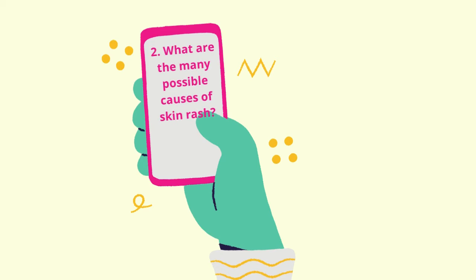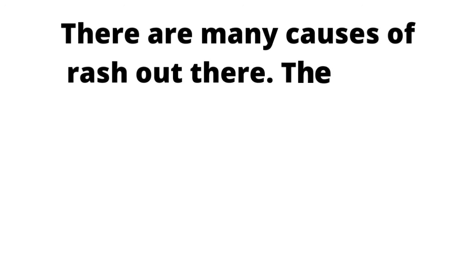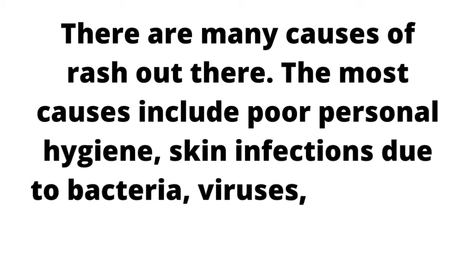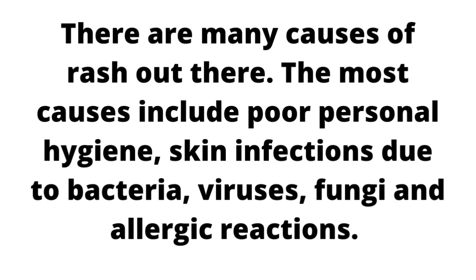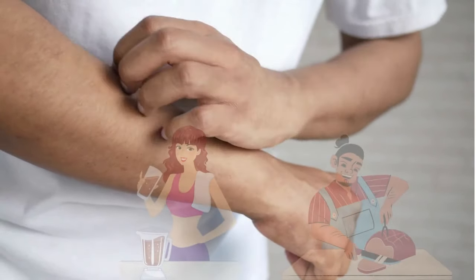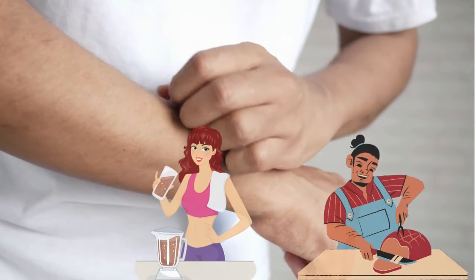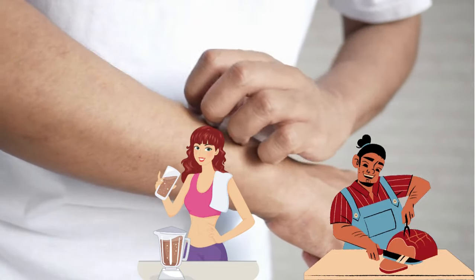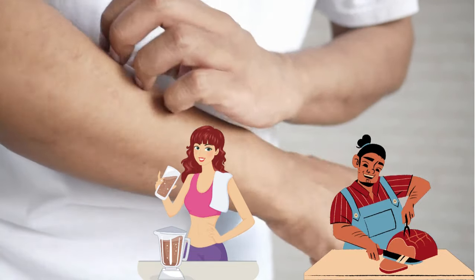What are the many possible causes of skin rash? There are many causes of rash. The most common include poor personal hygiene, skin infections due to bacteria, viruses, fungi, and allergic reactions. Hypersensitivity to certain medicines like HIV treatment, penicillins, and sulfurs could also cause an itchy rash. You may also react to certain foods like certain proteins and fats. Weather conditions like extreme sunlight and coldness could also predispose you to a body itchy rash.